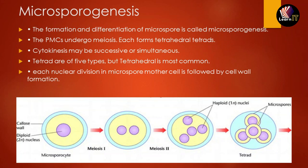The next topic is microsporogenesis — the formation and differentiation of microspores in the anther. All primary mother cells present in the anther undergo successive meiotic divisions and form tetrads. These tetrads are basically of five types, but the most common is the tetrahedral arrangement.